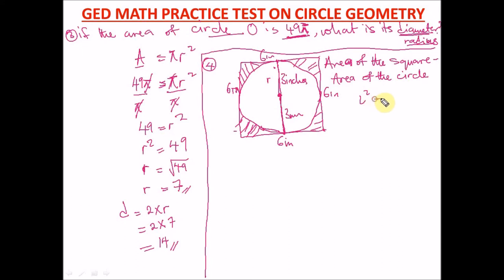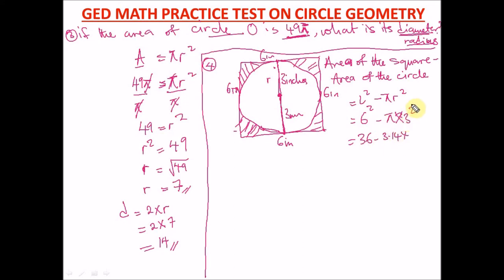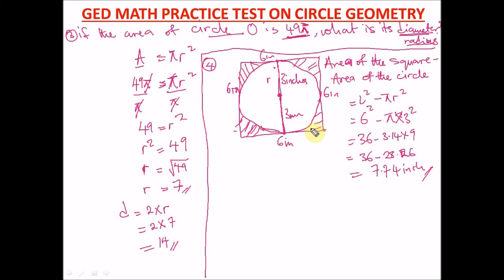The area of the shaded region = area of square − area of circle = l² − πr² = 6² − 3.14 × 3² = 36 − 3.14 × 9 = 36 − 28.26 = 7.74 square inches. That is our answer for the area of the shaded part.